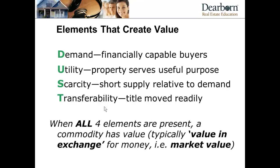This is typically value in exchange — value for money, i.e., market value. If any of these elements are missing, an item won't have value. If there's no demand — no buyers capable of buying a property — there's no market for it. Utility means the property has to serve a useful purpose. If the utility of the property is reduced — for example, if the home burns down — that reduces the value.